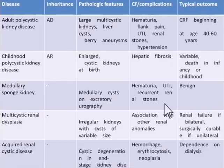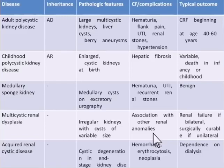Multicystic renal dysplasia: the kidneys are irregular with cysts of variable size. It is usually associated with other renal anomalies like horseshoe kidney or double ureter. The outcome is renal failure if bilateral, and it is surgically correctable if unilateral.